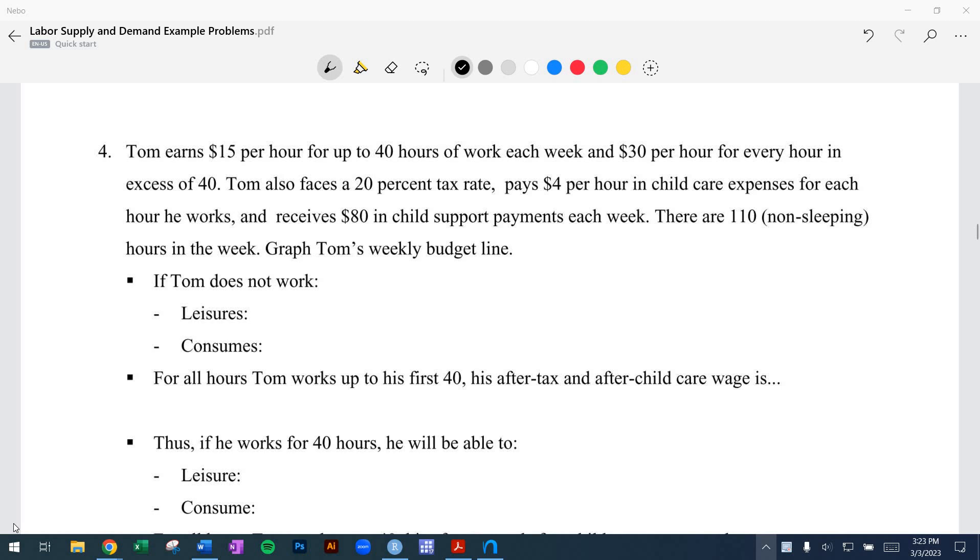So here's the situation. Tom works $15 per hour up to 40 hours, but then he can have some overtime. In this case, two times his wage as overtime for any hour over 40 hours. The other details: he has a 20% tax rate and pays $4 per hour in child care expenses for each hour he works, and he gets an $80 child support payment every week. 110 hours a week to choose between labor or leisure.